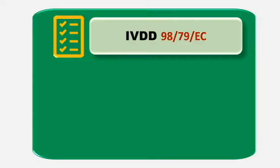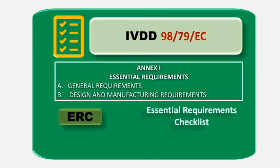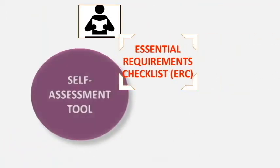Before going to GSPR, we will go through essential requirements first. IVDD Annex 1 contains essential requirements covering general requirements and design and manufacturing requirements. The essential requirement checklist is commonly known as ERC. Not all essential requirements will be applicable to all devices — the manufacturer will have only certain criteria applicable to their product. The manufacturer has to demonstrate conformity with these essential requirements. The ERC checklist serves as a self-assessment tool.